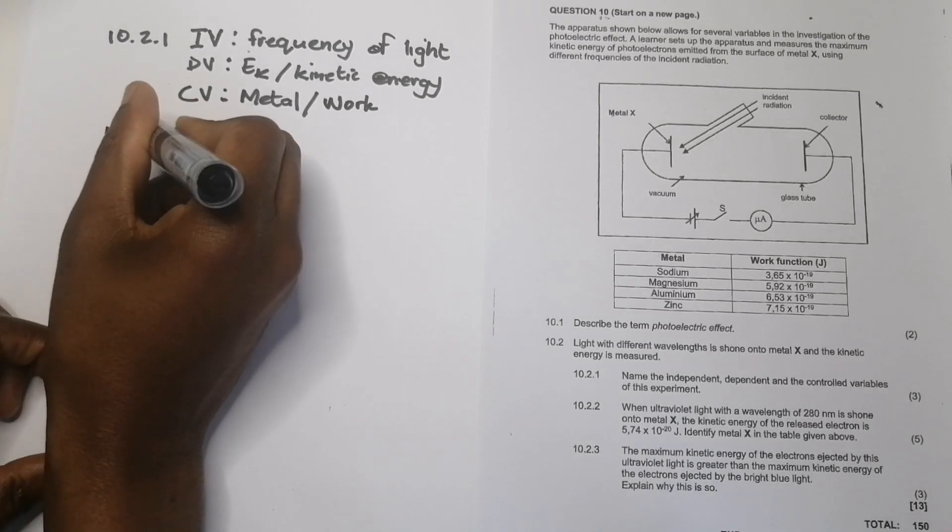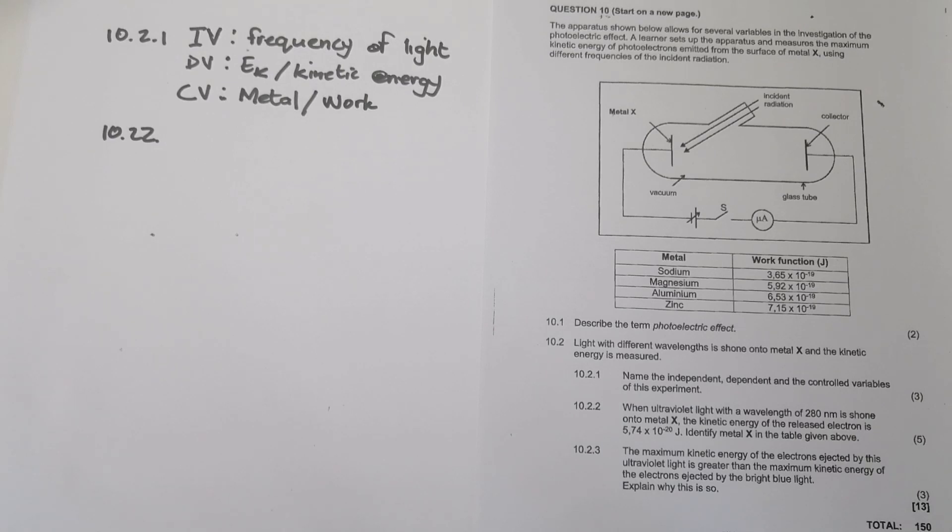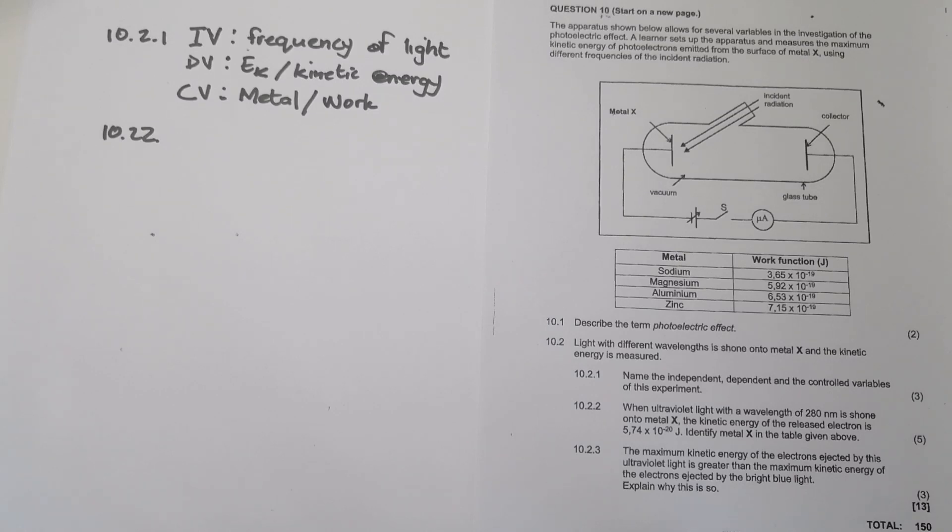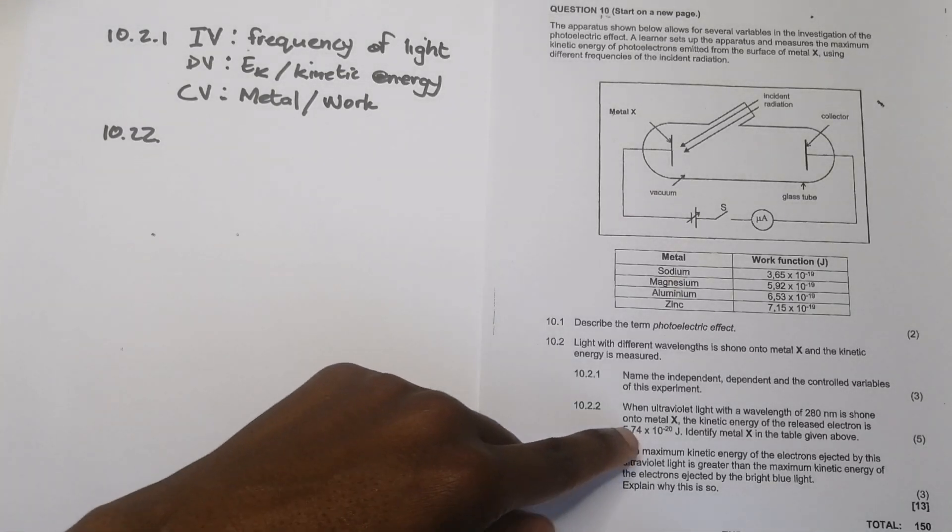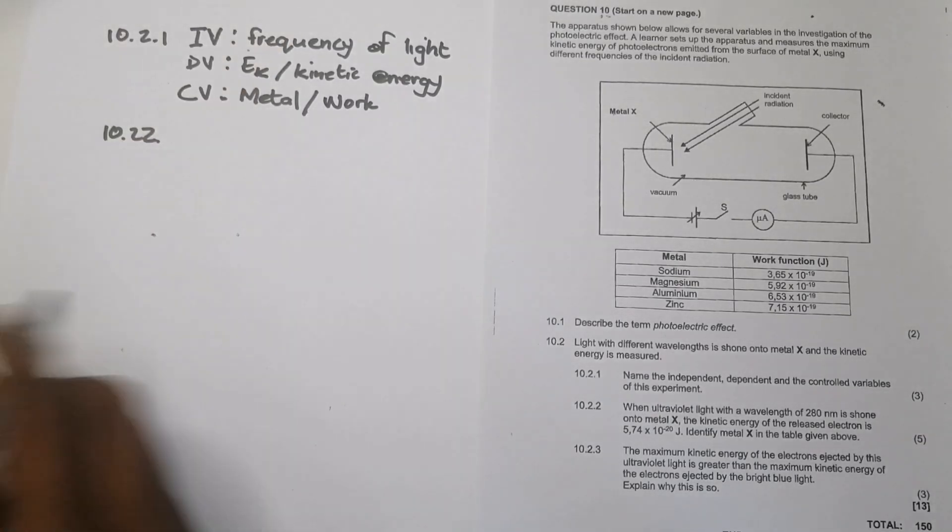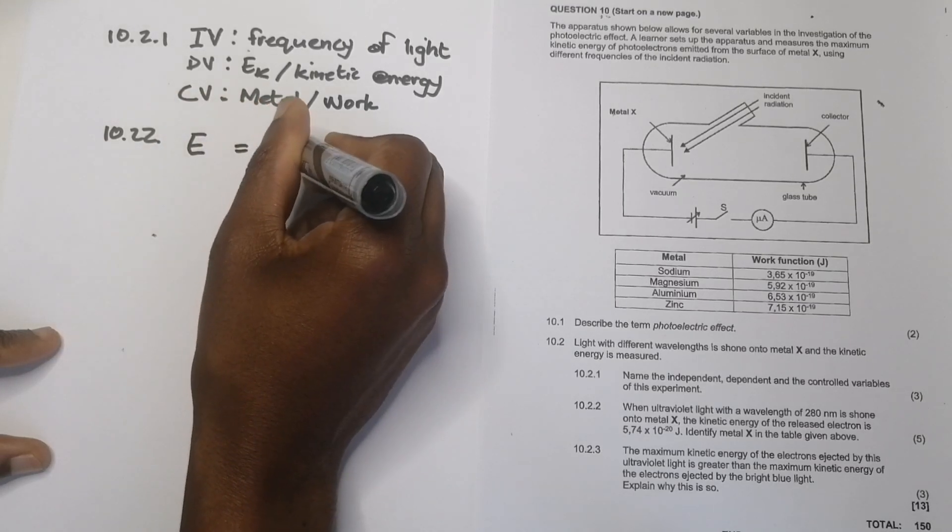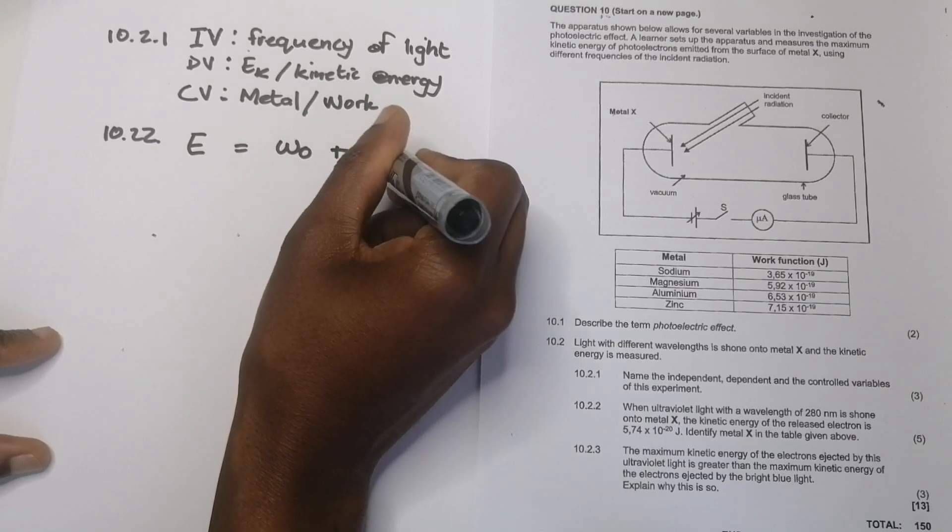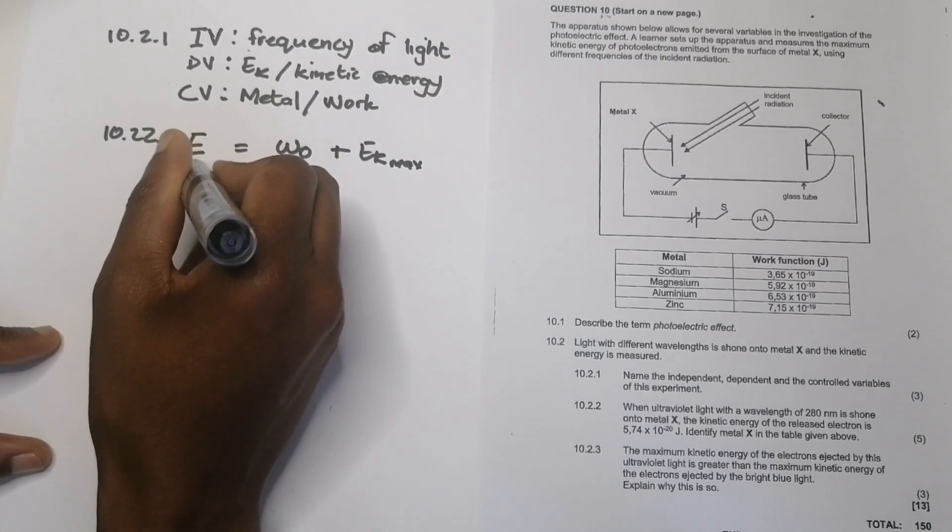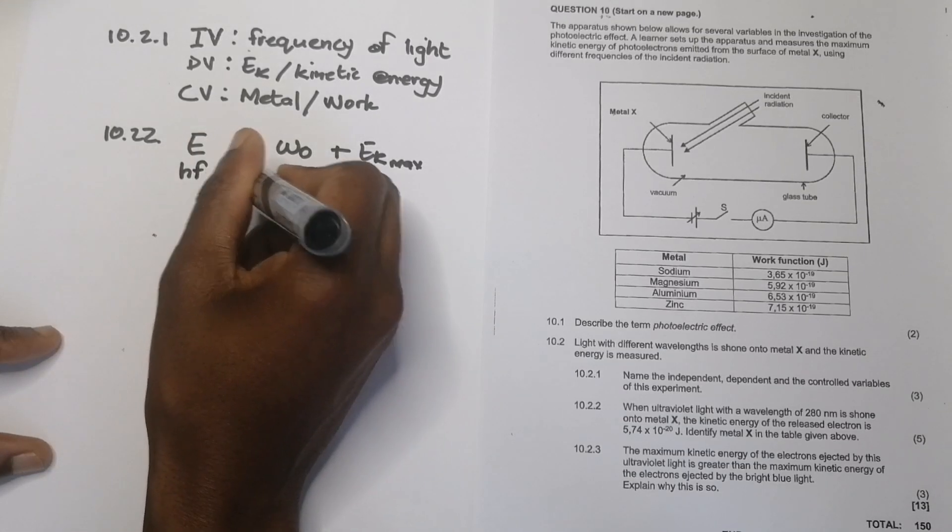OK. Right. Let's go to 10.2.2. We'll be done in no time. Right. They say when ultraviolet light with a wavelength of 280 nanometers is shown onto metal X, the kinetic energy of the released electrons. OK. So they give us the kinetic energy. They say identify metal X. So they give us a list of metals there. So what we're going to do is let's find out we've got the kinetic energy. We've got the wavelength of the metal. OK. And the thing about the photoelectric effect is just to always make sure that you know who's who in the zoo. Right. So E is equals to omega zero plus kinetic energy. OK. That's E k max.